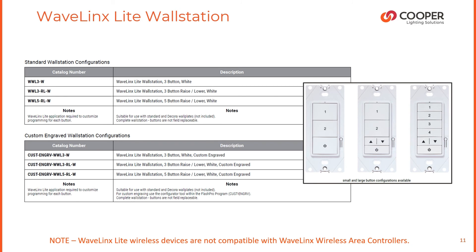A quick note on Wavelinks Light wall station configurations: they're available in three line voltage options, 120 to 277 volts, 50 to 60 hertz, with a 5-button raise/lower configuration. Standard generic engravings are available, but custom engraving is also available for wall stations through our online configuration tool.